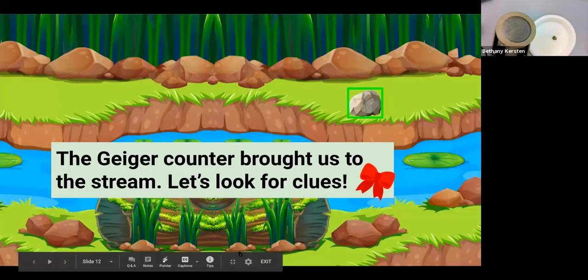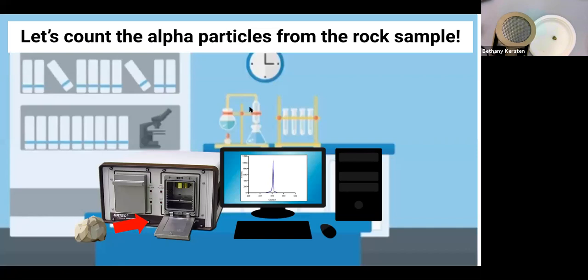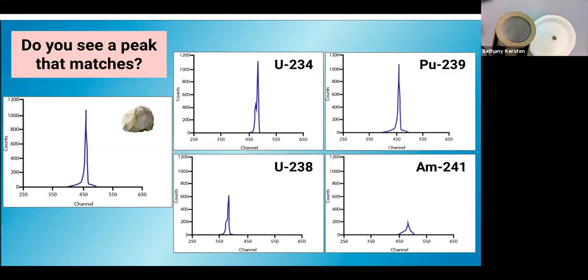So the next step can be putting it back in the alpha spectrometer. Okay. So now, yes, like Laura said, we know that the rock is radioactive. So let's make sure that it's because of Pluto, so the plutonium-239 and not anything else. Does it match? Yeah. Yeah. So we know for sure that Pluto has touched this rock, and so we're on the correct path to find her.